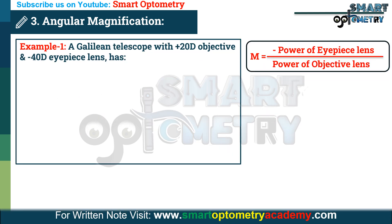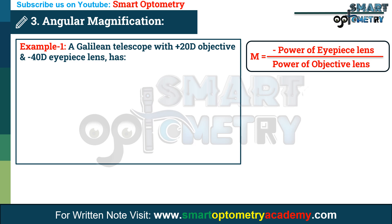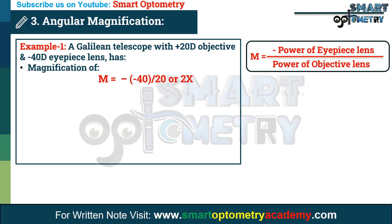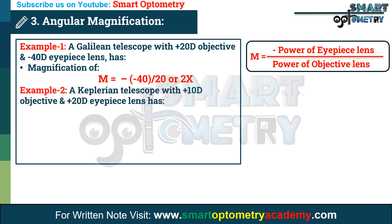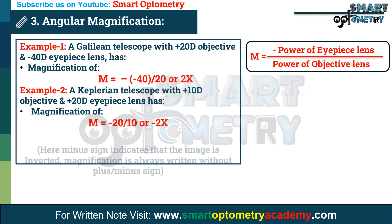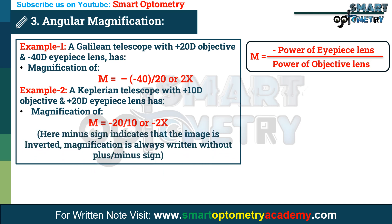For example, a Galilean telescope with a +20 diopter objective and a −40 diopter eyepiece lens has magnification M = −(−40) divided by 20, or 2x. Note: the minus sign indicates that the image is inverted, and magnification is always written without a plus or minus sign.